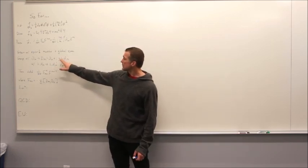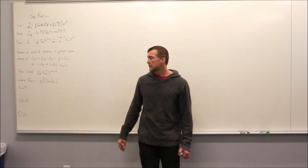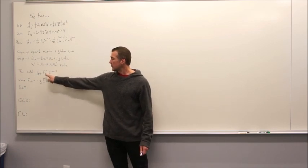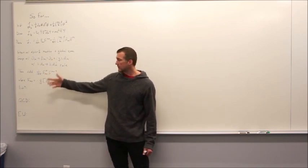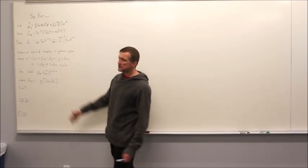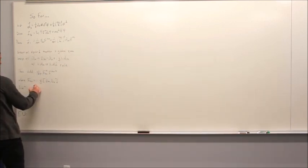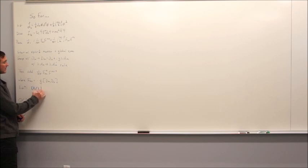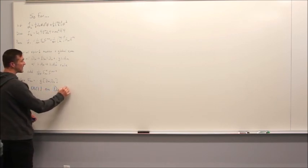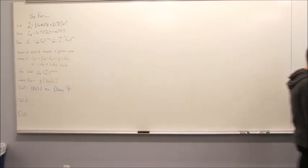After you've gotten your new covariant derivative with the transformation for A, you then introduce a kinetic term — like Franco was mentioning — that allows the gauge field to propagate, where you get the form of F_{μν} from the commutator of covariant derivatives. Then we can apply this exact same prescription to different starting points and get different theories. We saw explicitly that if we take our gauge group to be U(1) and let it act on Dirac fermions, then we get exactly electricity and magnetism.